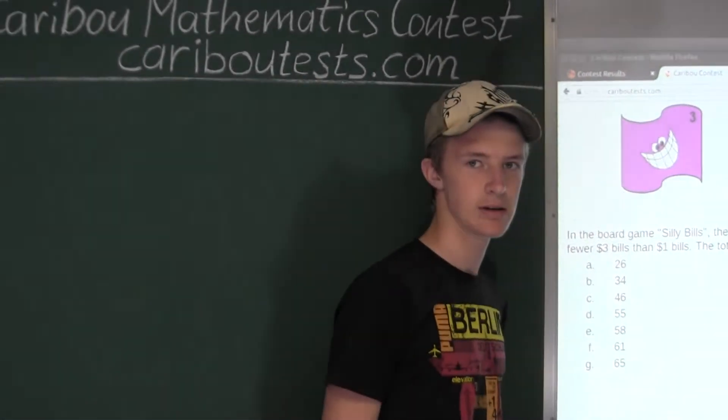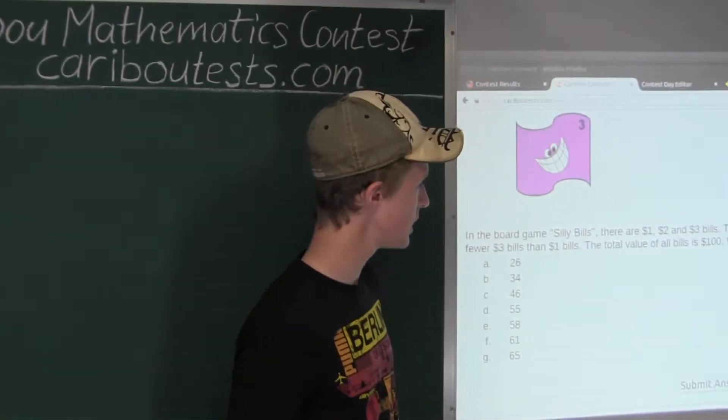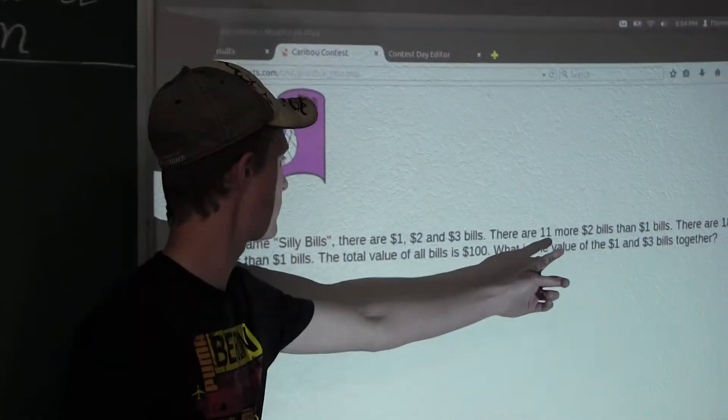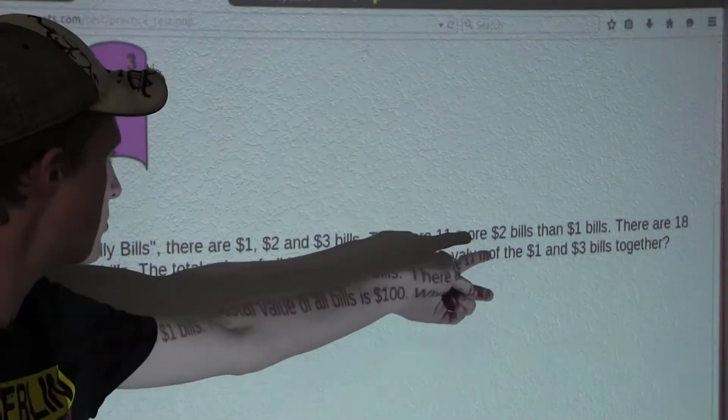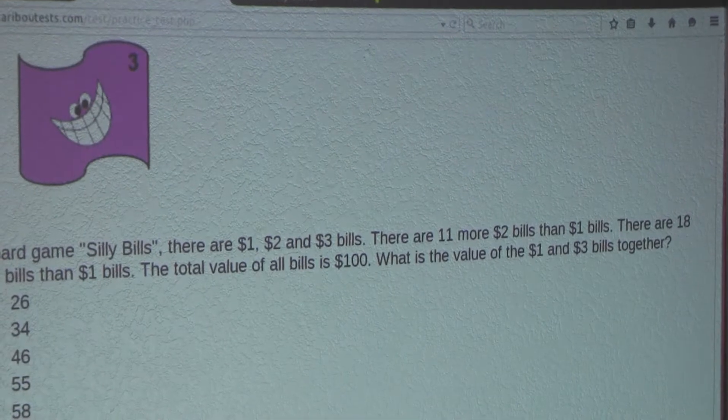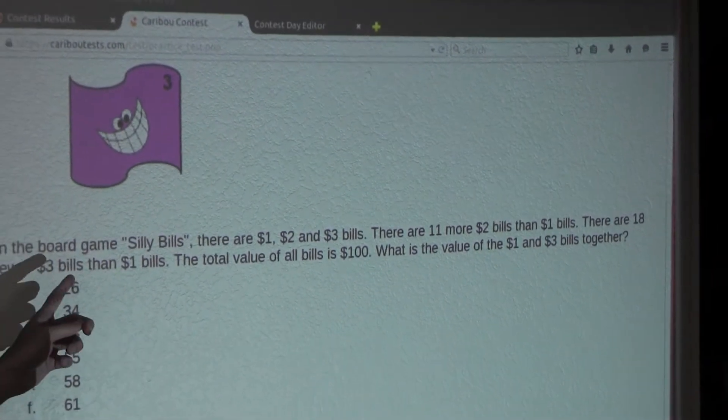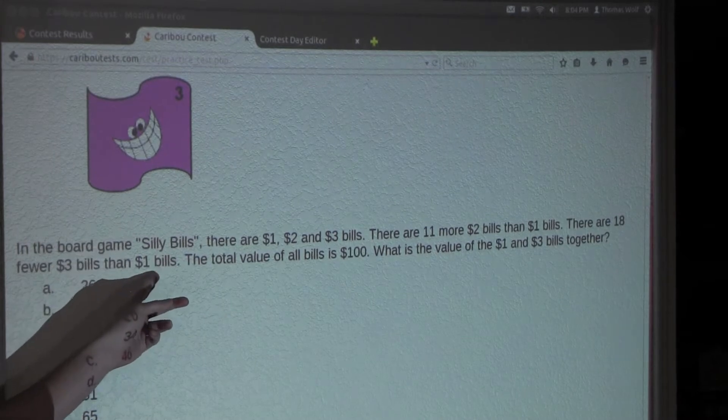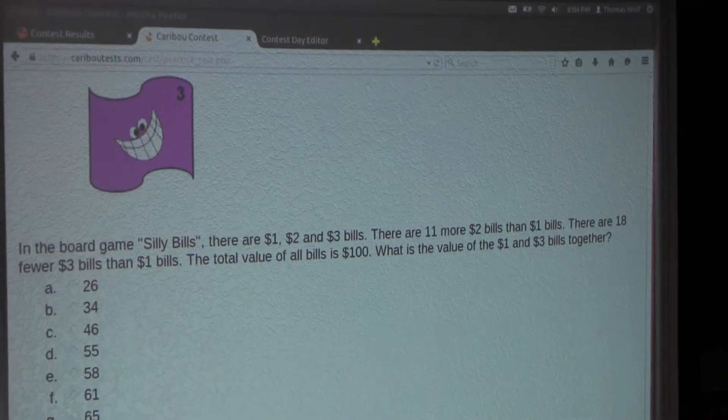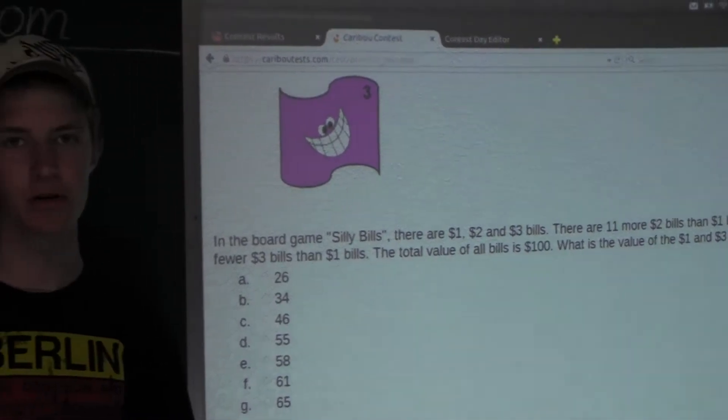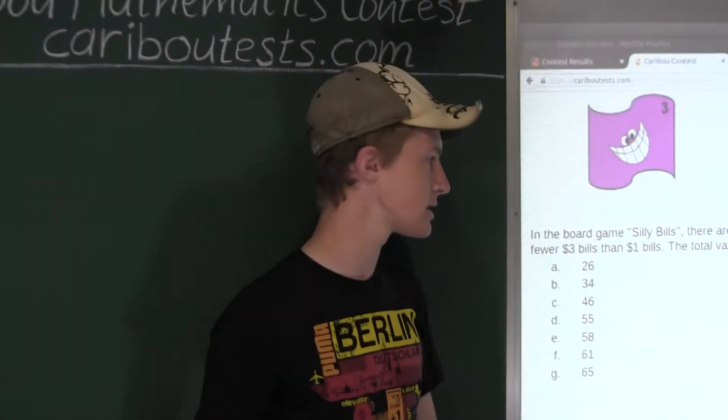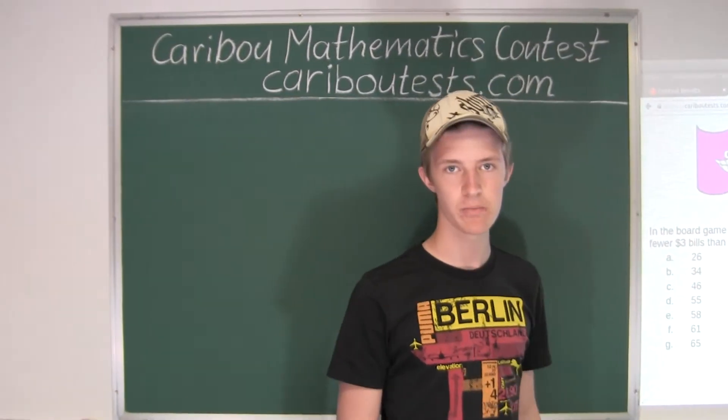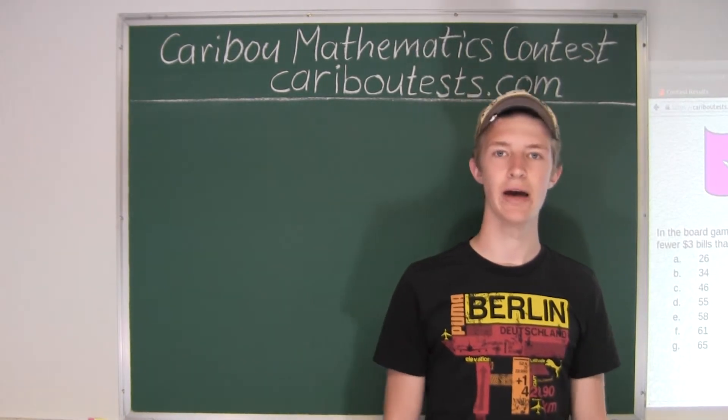In the question, we have a relation between the number of $2 bills and the number of $1 bills, and we also have a relation between the number of $3 bills and the number of $1 bills. So we will call the number of $1 bills A, and then we will express the number of $2 and $3 bills in terms of A.